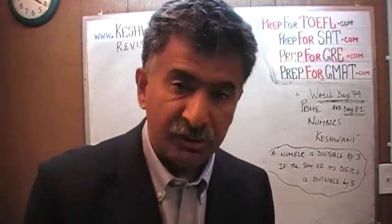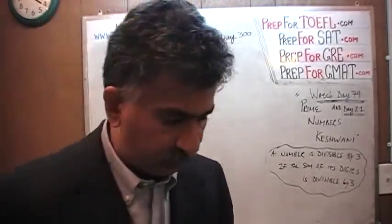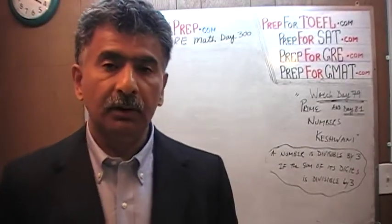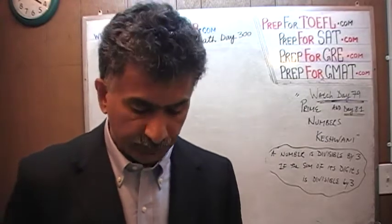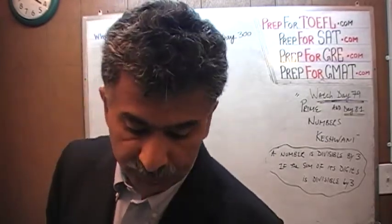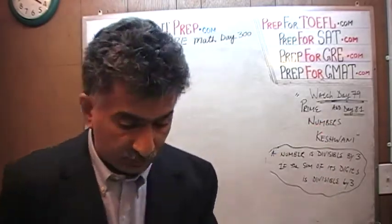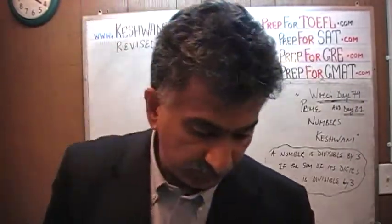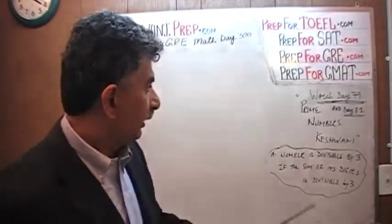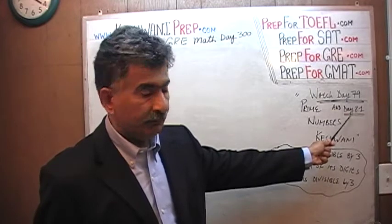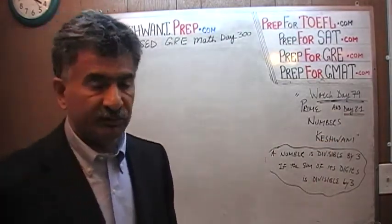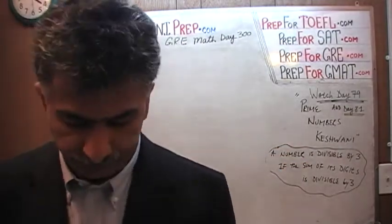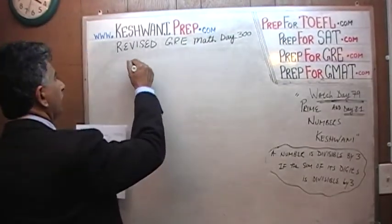The problem we are about to solve is actually one that is not in the book — it is a bonus problem. For the last two or three days we have been dealing with problems about prime numbers. If you have not watched the two videos taped out of the first edition of the revised GRE — day number 79 and day 81 — it is imperative that you watch those videos on prime numbers. Just type in prime numbers and my name and you can search that way. Here is the problem: it is a column comparison question dealing with the concept of prime numbers.